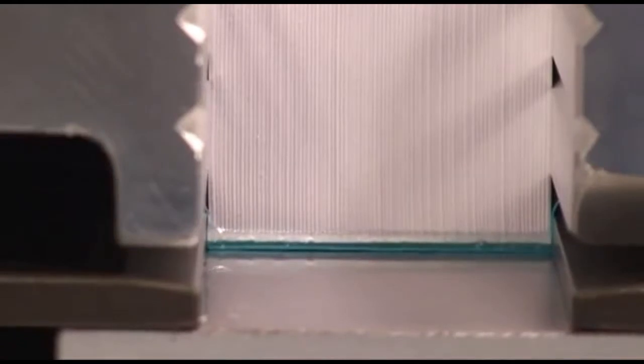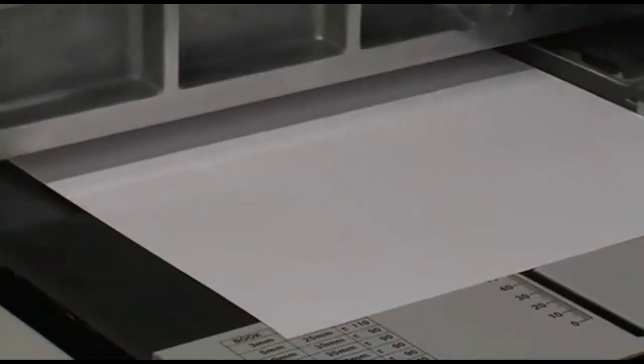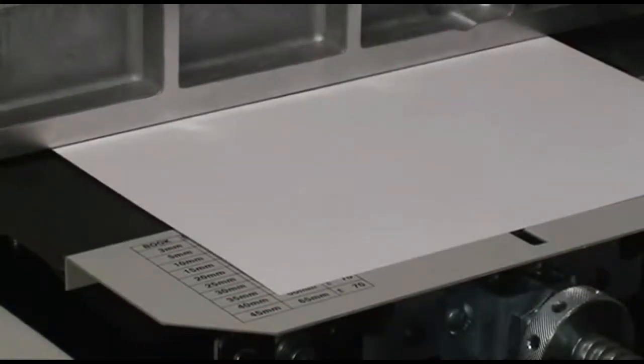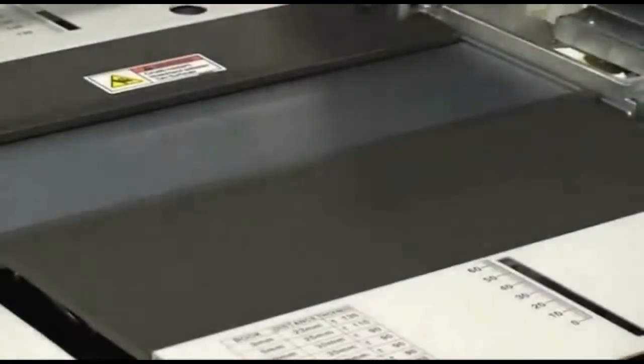The nipper is strong enough to bind most books without creasing the cover. Side gluing allows for a hinge, with or without creased covers.